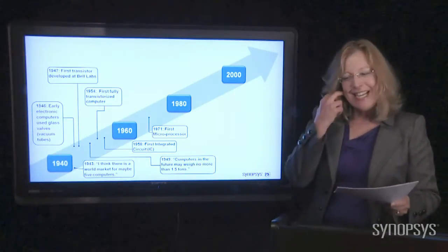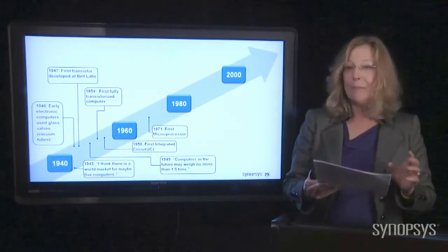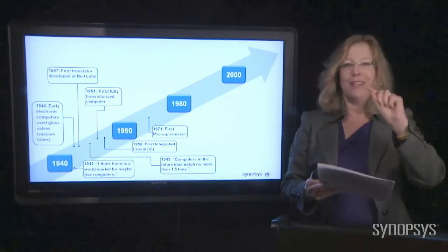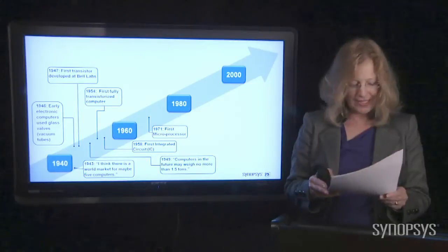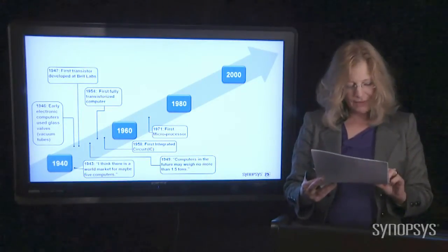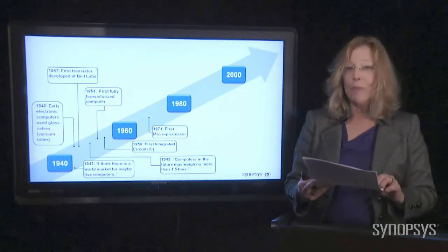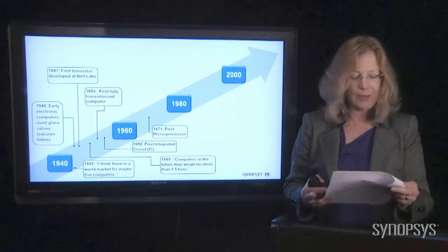In 1971, the first microprocessor was invented by Intel. And Intel, as you all know, the Intel Inside logo, fuels the heart of many of the computers that we use today. The first microprocessor that Intel invented had 2,300 integrated transistors. So back then that was a huge number, but today it's actually minuscule compared to what we can do.